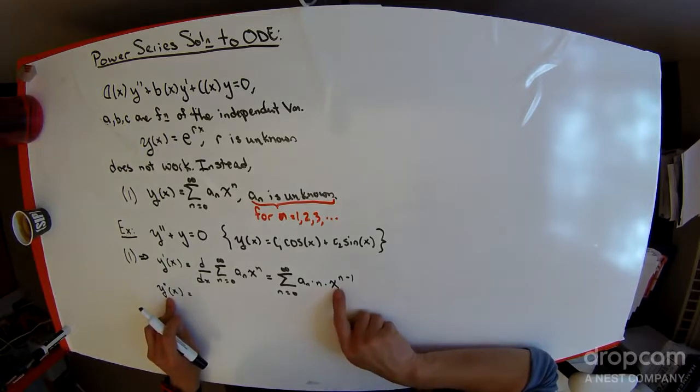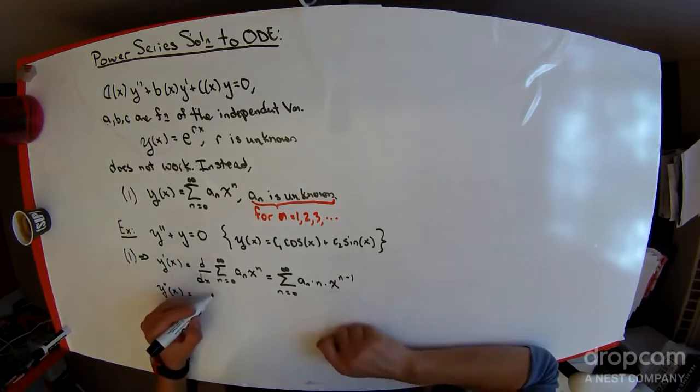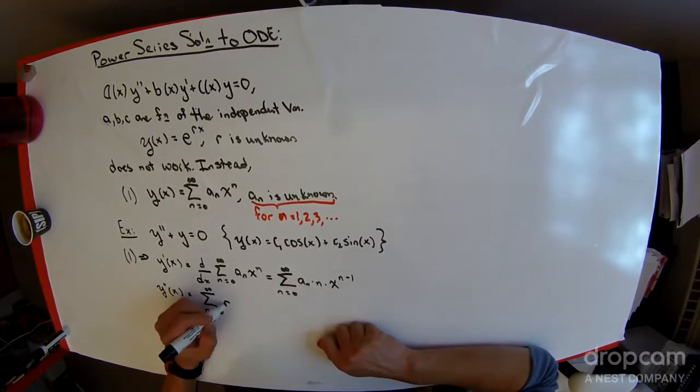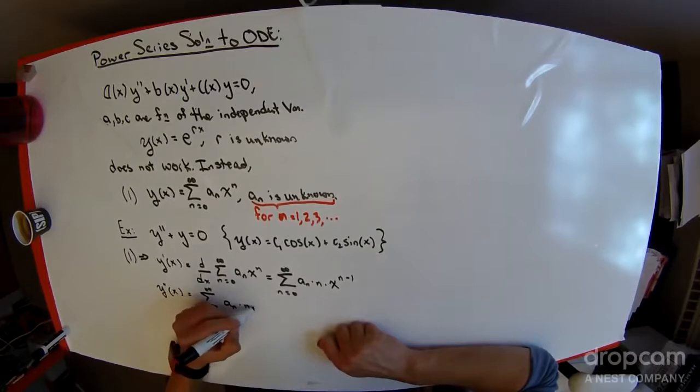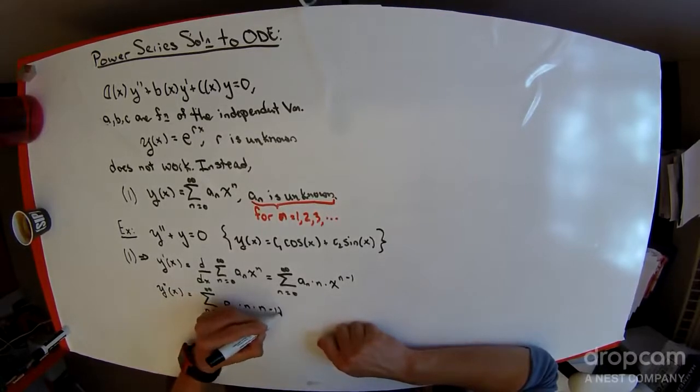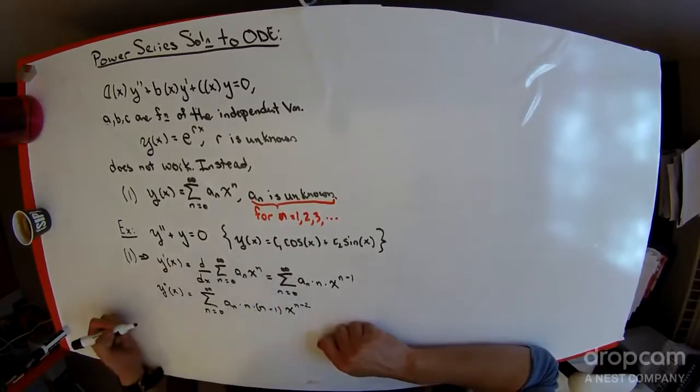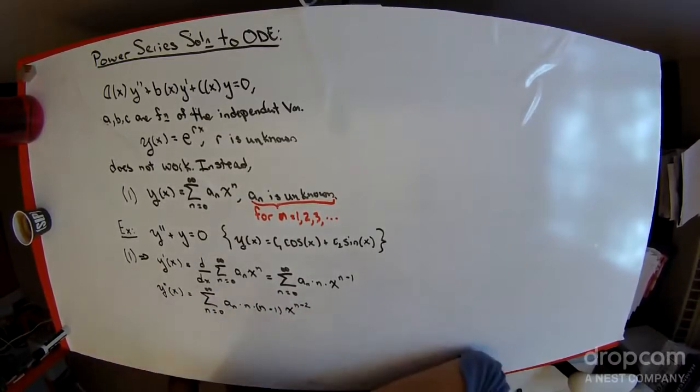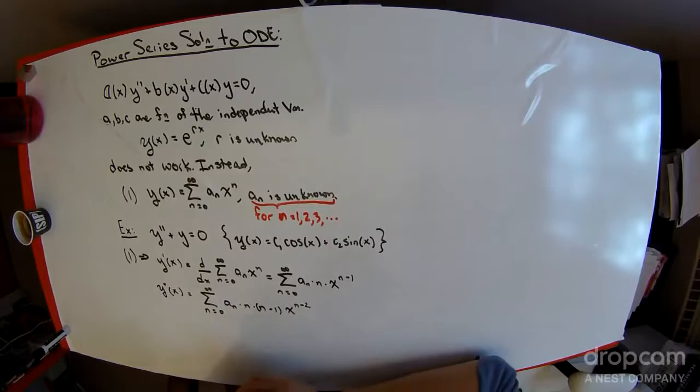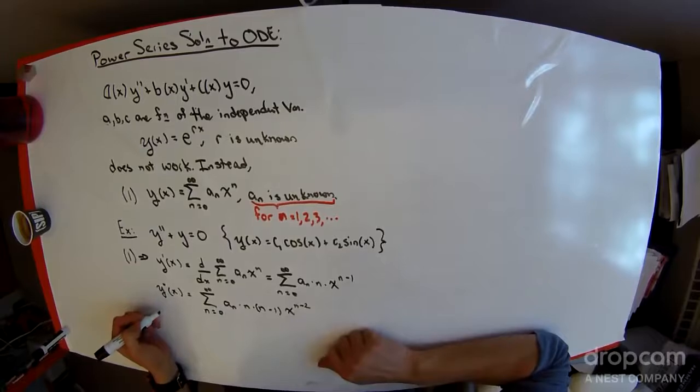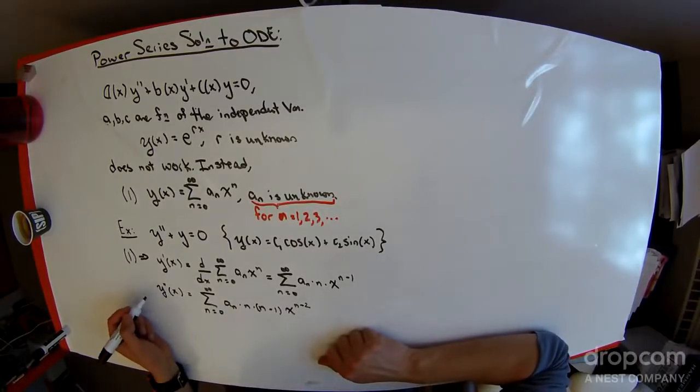Taking a second derivative now means that we take a derivative of this x to the n minus 1 to get the sum n equals 0 to infinity of a sub n times n times n minus 1 times x to the n minus 2. While the power series is a little intimidating to look at, we should remind ourselves that the virtue of the method is that derivatives are falling squarely on the power function and power functions are the easiest of functions to differentiate.